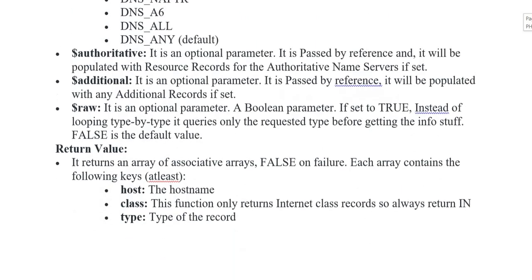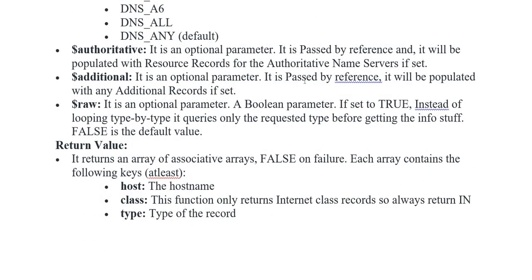Ab baat karte hain variable authoritative. Yeh optional parameter pass kar rahe hote hain, hum reference ko — aur ek populated resource hai jisme record put kia jaata hai apne server ka, jab hum set kar rahe hote hain. Second aata hai variable additional — isko pass kia jaata hai, reference hai, yeh bhi populated hai jo additional records put kar raha hota hai.